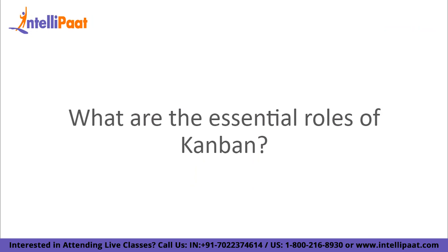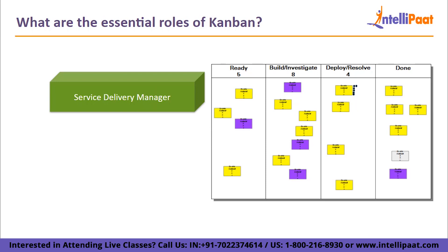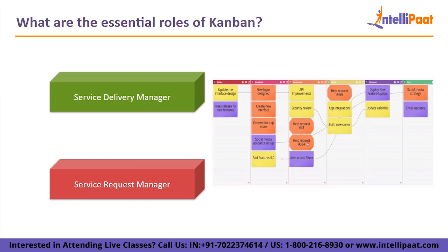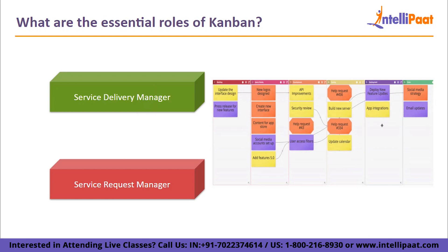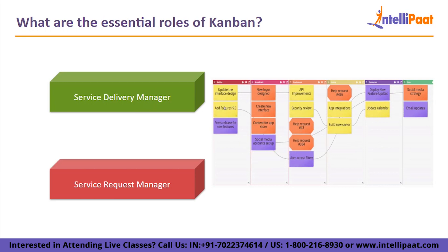Let us take a look at the essential roles of Kanban. First, the Service Delivery Manager. The SDM is in charge of increasing workflow effectiveness. Although there are some resemblances, this function is neither the same nor directly comparable to a Scrum Master. Then we have the Service Request Manager. The client's demands and expectations must be comprehended and interpreted by the Service Request Manager. It is comparable to and occasionally mistaken for the Scrum Product Owner role. The SRM serves primarily as a Risk Manager and Facilitator, using a predetermined set of value-related criteria to prioritize work items by the value they provide.